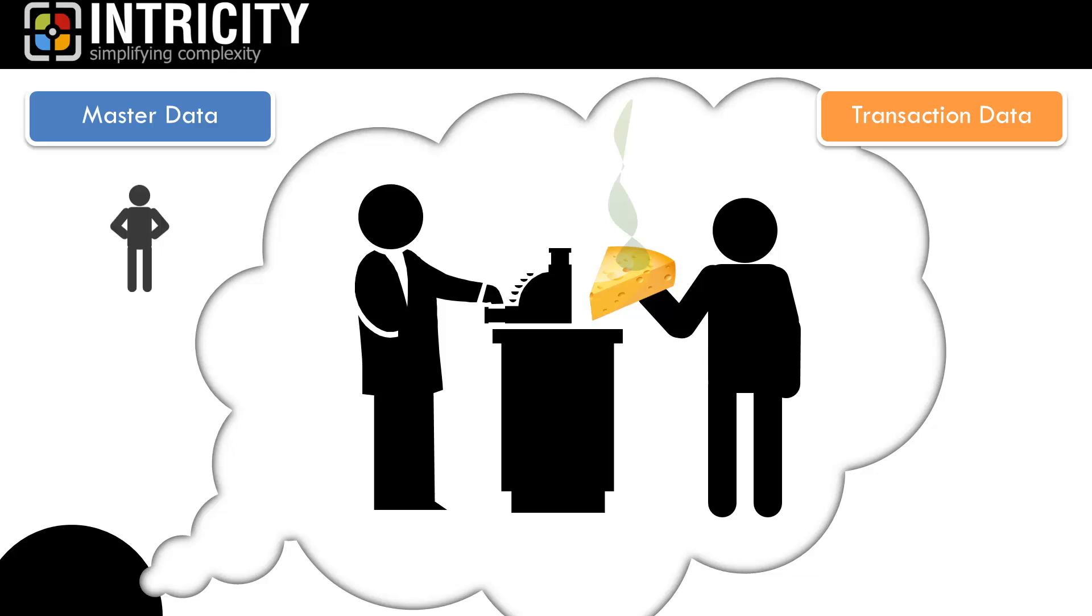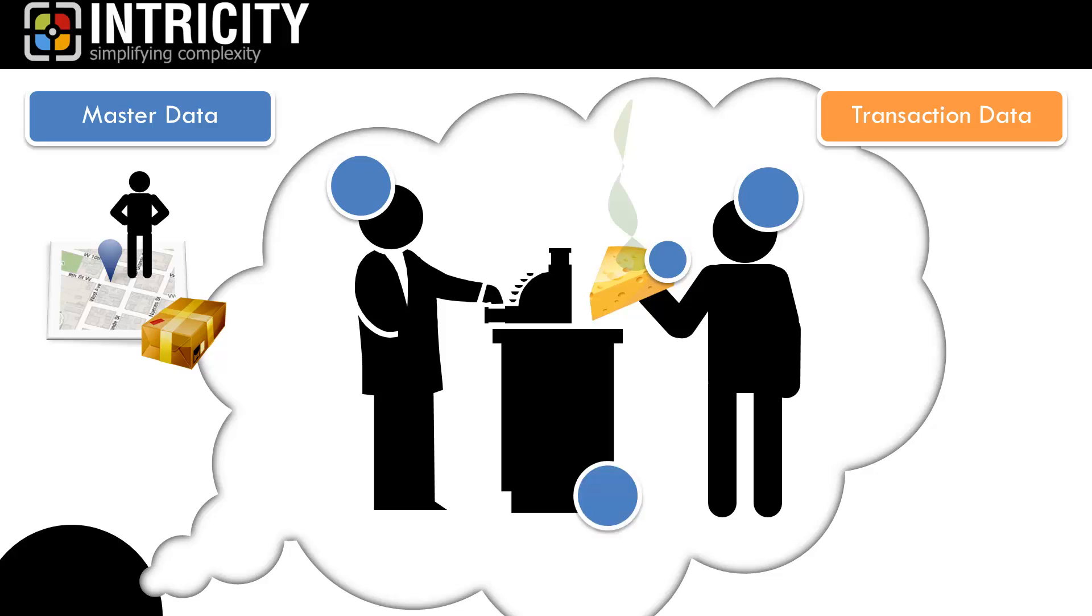Master data represents the people, places, or things that an organization cares about. So in this case, it would be you the customer, the cheese product, the employee, and the store.